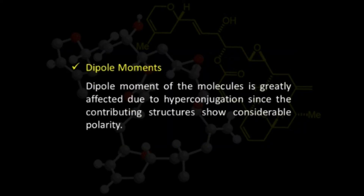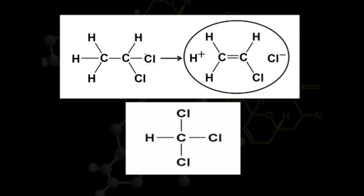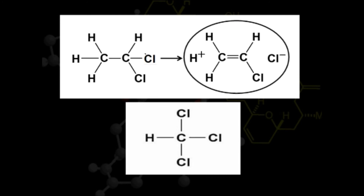The dipole moment of molecules showing hyperconjugation is greatly affected because these molecules show charged structures. For example, comparing a haloalkane having three alpha carbon-hydrogen bonds with chloroform, which has no alpha carbon-hydrogen bond, the molecule with hyperconjugation shows charged structures. Therefore, the dipole moment shown by that molecule is much greater compared to chloroform.